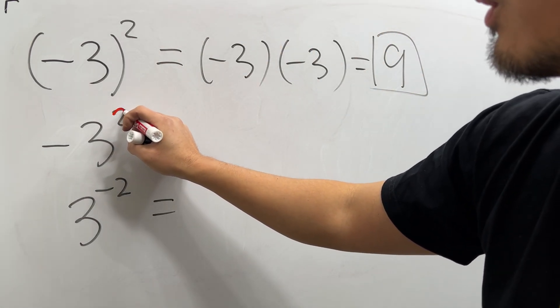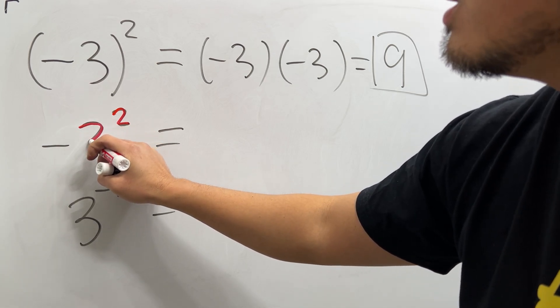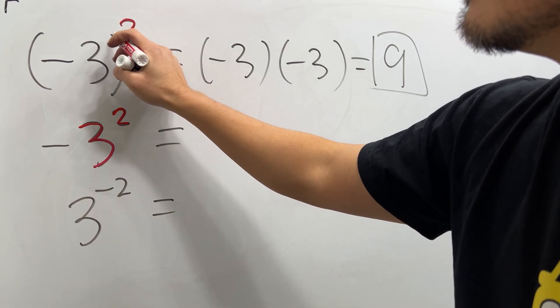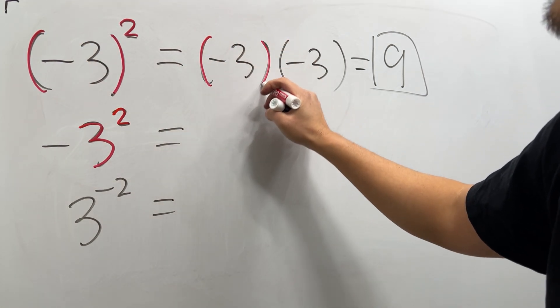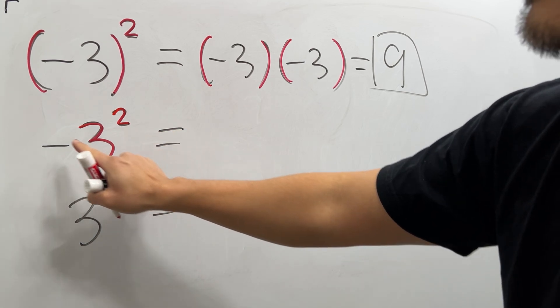For the second one, the power two is only for the three. There's no parentheses anymore. Earlier, the two is to the parentheses. That's why we wrote this down twice. But this time, the two is only for the three. There's no parentheses.